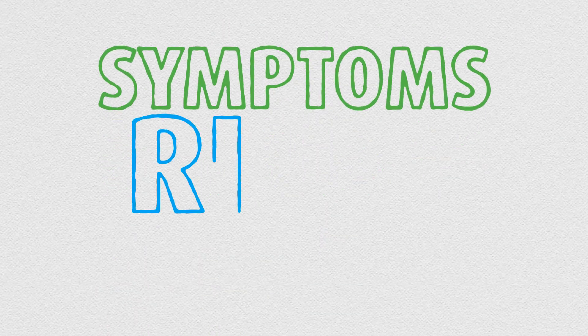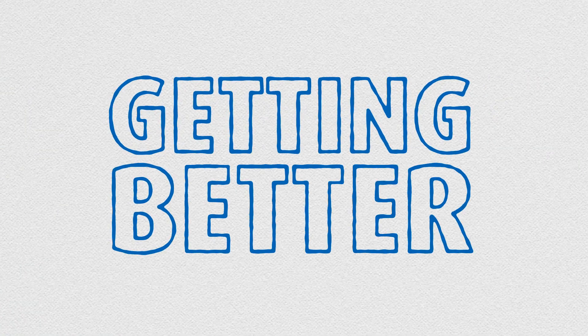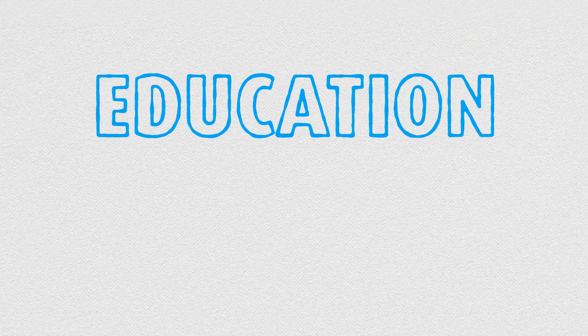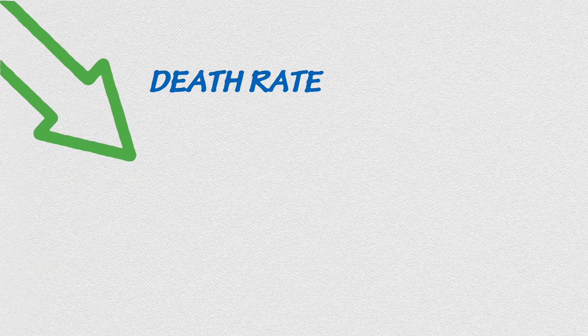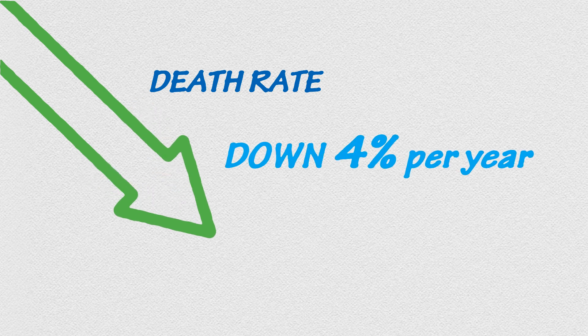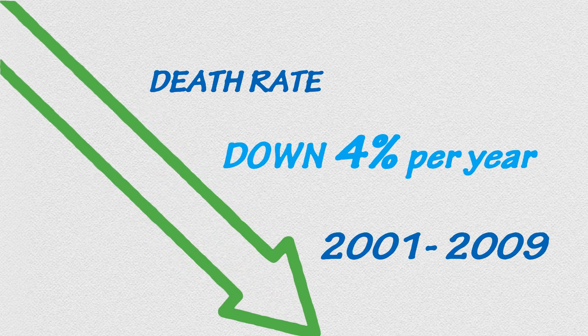You've seen the symptoms, you've seen the risks, you've seen the numbers. The good news is that things are getting better. Education, detecting cancer earlier, better treatment options. They're all helping the death rate from prostate cancer fall, by about 4% per year, between 2001 and 2009. And they keep falling to this day.